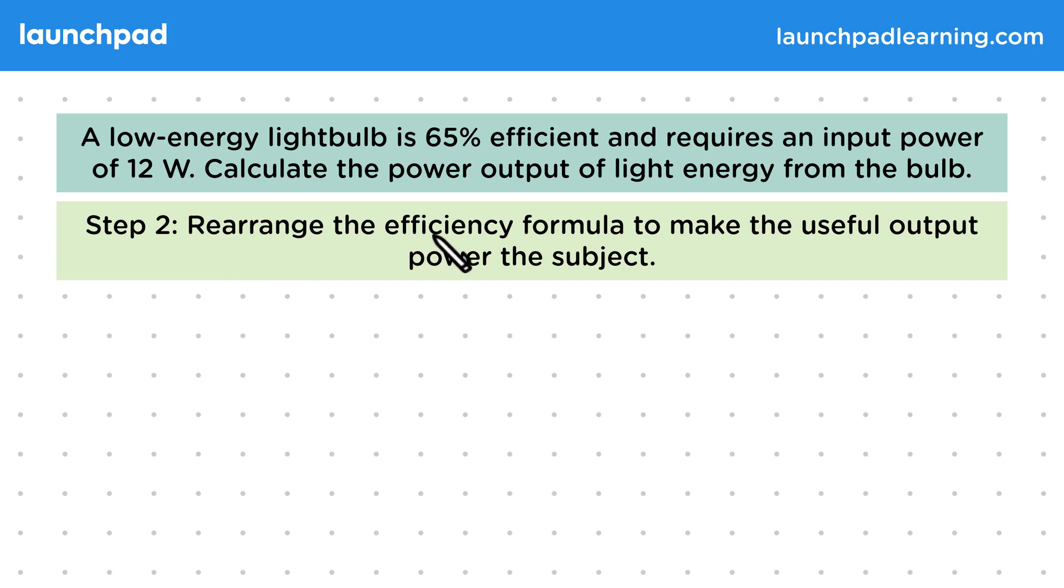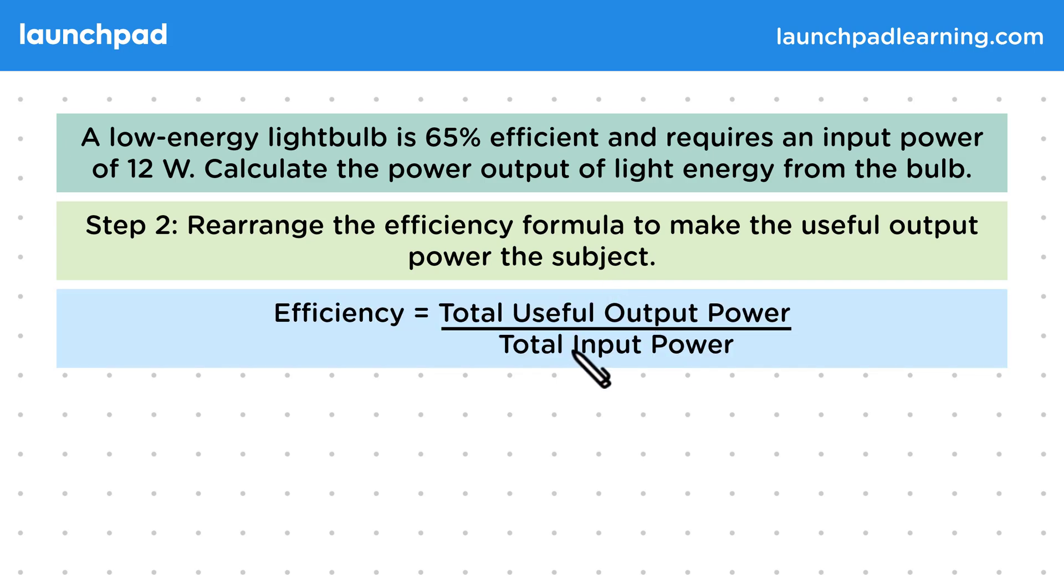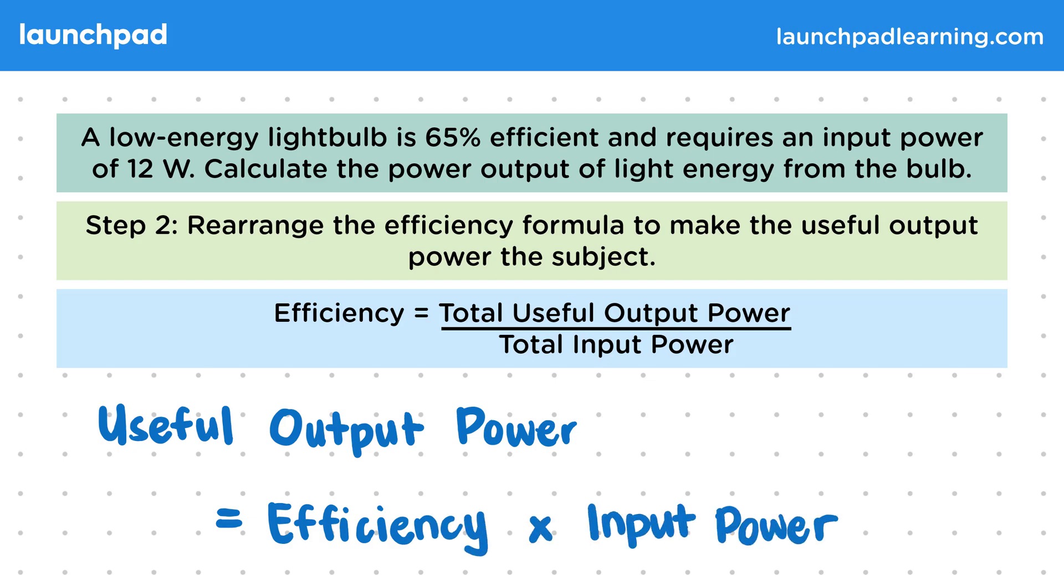For step 2, let's rearrange the efficiency formula to make the useful output power the subject. We can do that by multiplying both sides of the equation by the total input power. That becomes useful output power is equal to the efficiency multiplied by the total input power.